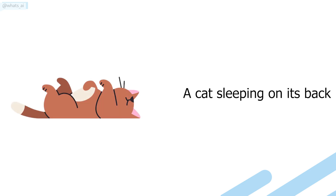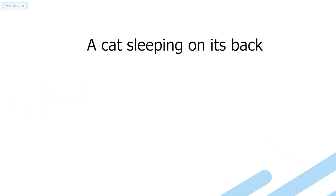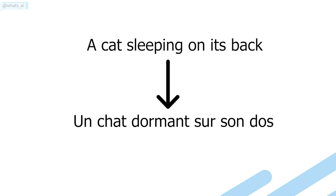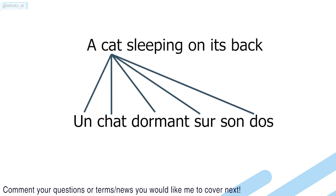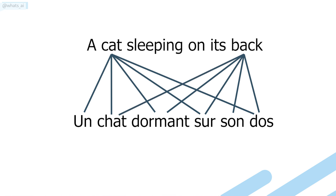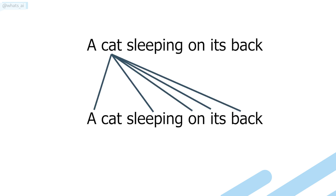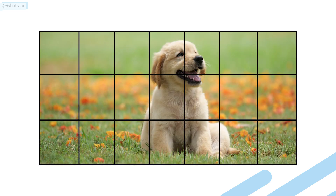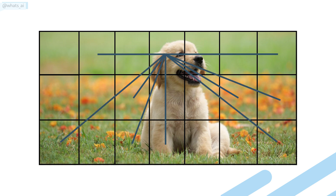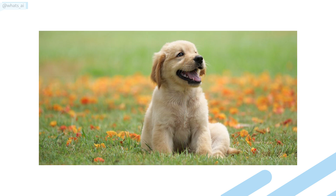In NLP, a classical input is a sentence, and in computer vision it's an image. To quickly introduce attention, consider sending a sentence through a transformer network for translation — attention measures how each word in the input is associated with each word in the output. Similarly, self-attention measures a specific word's effect on all other words in the same sentence. This same process can be applied to images by calculating the attention of patches and their relations to each other.